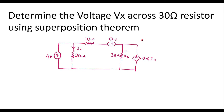In this video, I will consider one numerical on superposition theorem. Determine the voltage Vx across the 30 ohm resistor using superposition theorem. So this is the given circuit. Here we have Vx, and we have to find voltage Vx using superposition theorem.